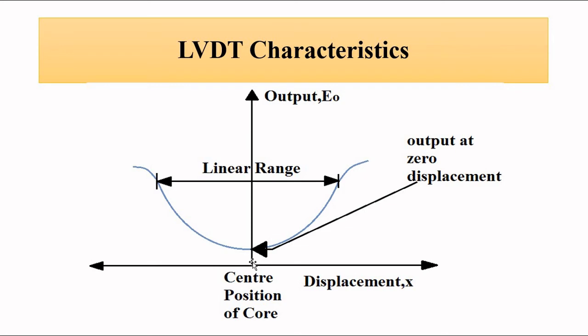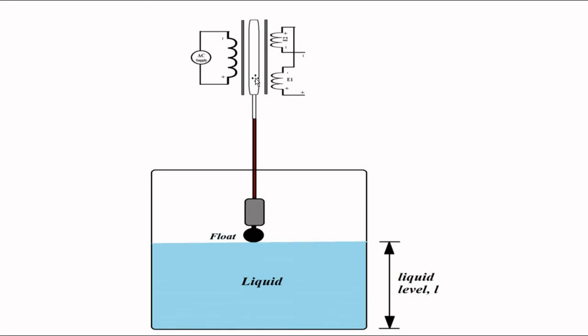This LVDT method, which is used for the measurement of displacement, is used here. The up and down movement of the liquid level, the up and down movement of the liquid, is converted into linear displacement by connecting it to the movable ferromagnetic core of the LVDT. In different ways we have discussed: in the first method, the capacitive method, we connected this float to the movable plate of the capacitor; in the inductive method, we connected it to the movable armature.